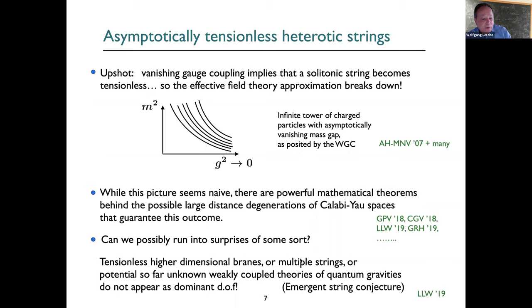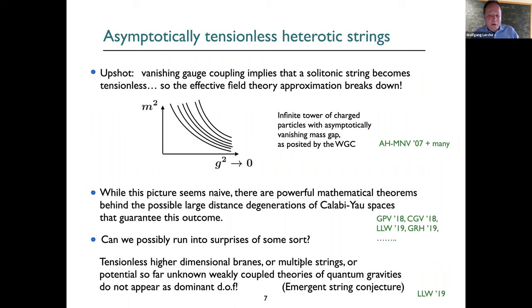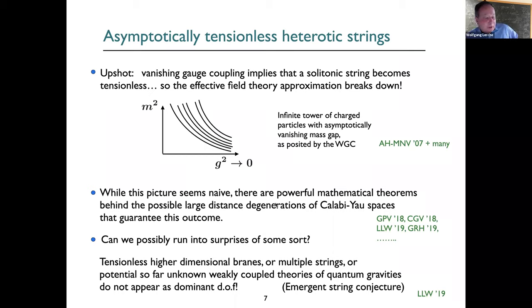Can it happen that two strings become simultaneously tensionless, or that higher-dimensional branes become the dominant degrees of freedom at low energy? No, it cannot. By a relatively general analysis based on mathematical theorems, one can show — what we call the emergent string conjecture — that the only possibilities are either a KK tower appears, amounting to decompactification, or, if you stay in the same dimension, a weakly coupled asymptotically tensionless string appears.